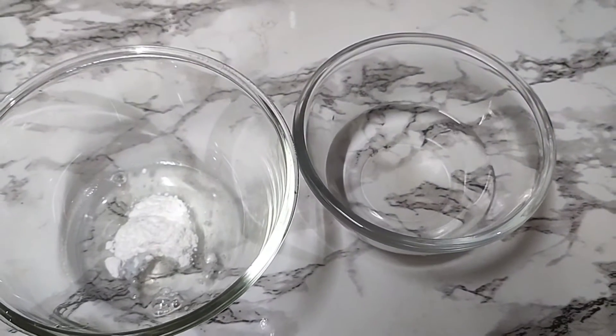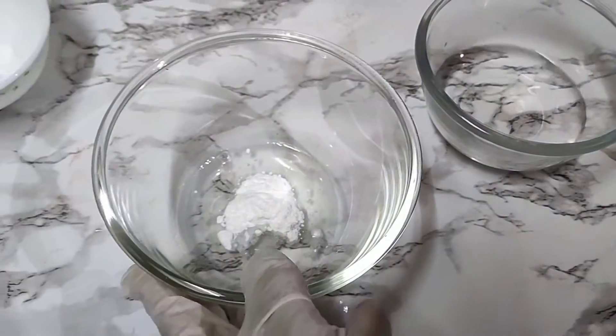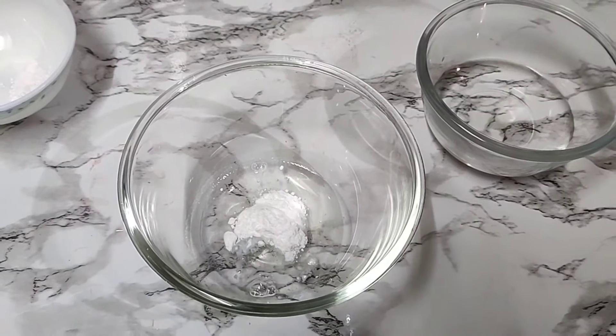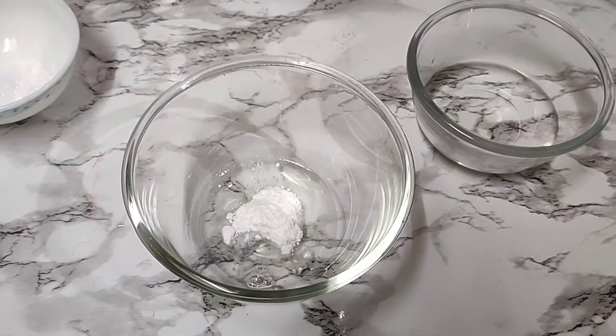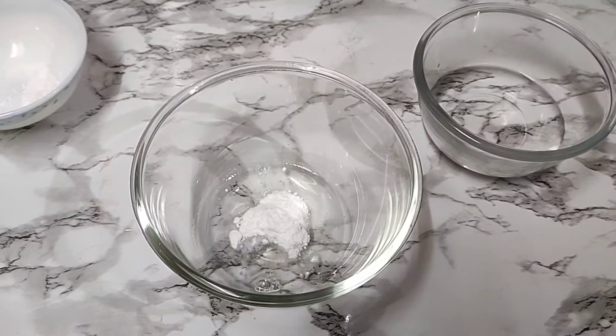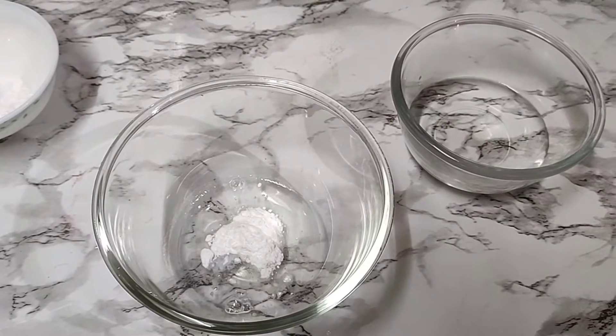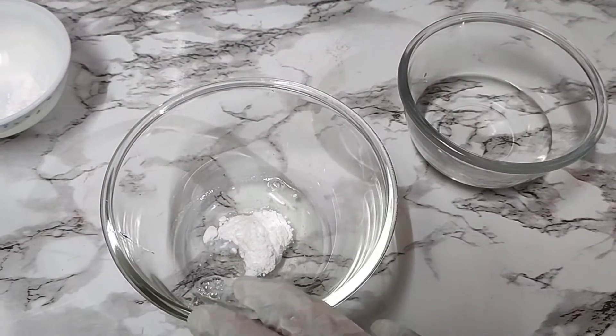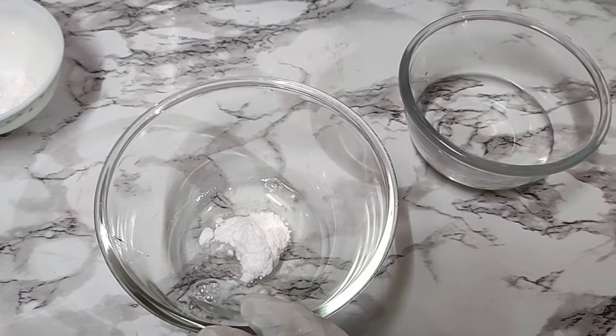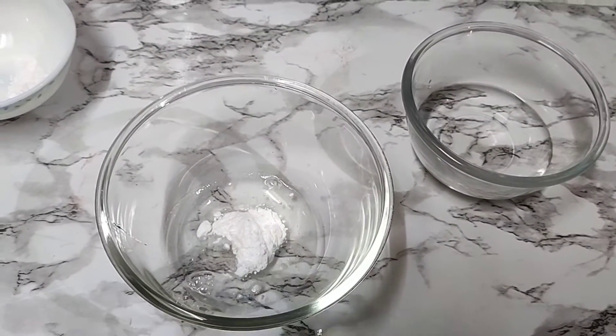Since you all know that whenever we use SCI powder we need to keep this on the double boiler to melt down all the particles of the SCI powder. So I will go ahead and heat this on the double boiler and then we'll proceed further.